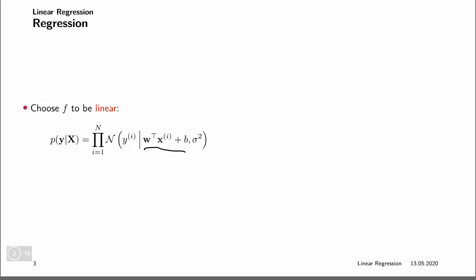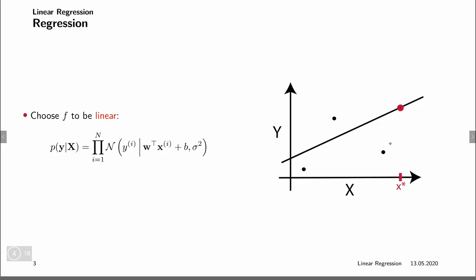In linear regression, we choose f to be linear. So the mean is given by our linear regression — our features times the weights plus the bias. For each training data point x, f is linear, and the difference between the label and the regression line is our epsilon_i, which is Gaussian distributed with zero mean and some variance.